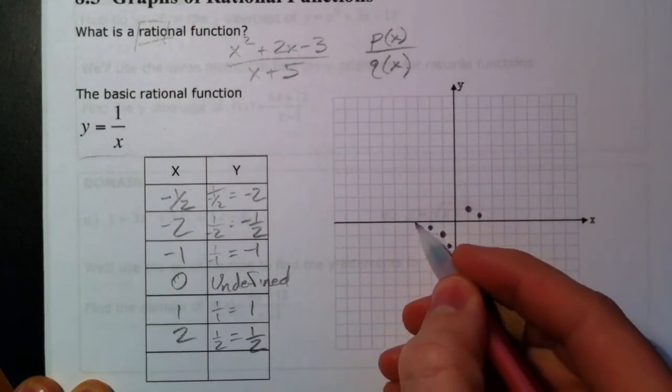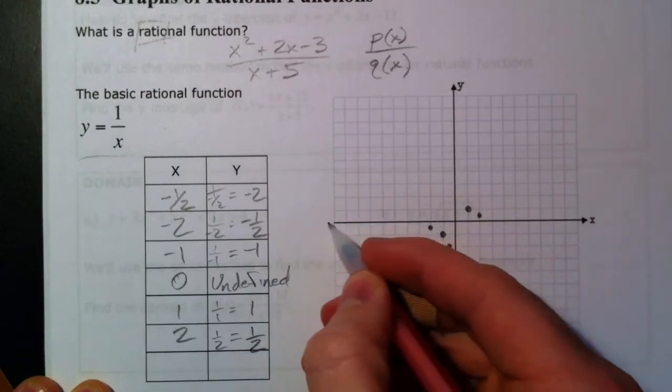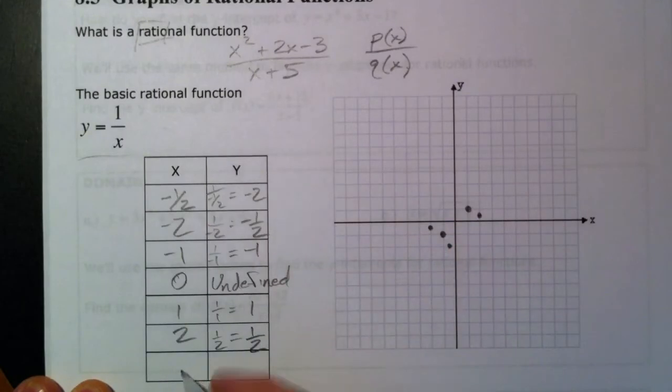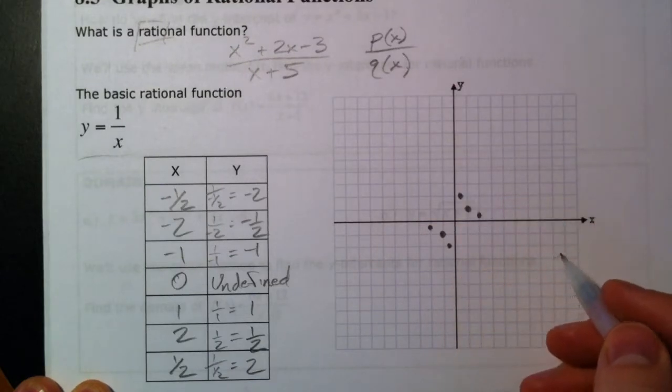It's going to keep getting closer and closer to the x-axis over here. As you keep dividing by a bigger number, it's going to get closer and closer to 0. And if we pick 1 half over here, 1 divided by 1 half is the same as 1 times 2, which is going to give you a positive 2. And so positive 1 half, positive 2 is the other point.